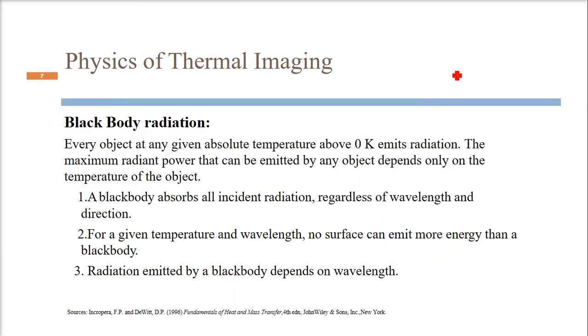Every object at any given absolute temperature above zero Kelvin is going to emit radiation. We are talking about the emitted radiation—emitted energy, emitted heat, or emitted radiation. Anything which is above zero Kelvin is going to emit radiation or heat. The maximum radiant power that can be emitted by an object depends only on the temperature of the object. When we talked about the black body, black body absorbs all incident radiation regardless of whatever direction it is coming or wavelength is there.